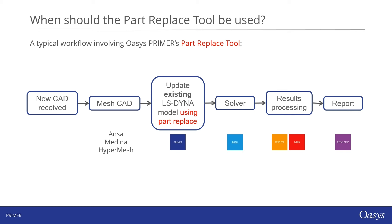Let's look at what a typical workflow might look like involving the tool. Starting from the left, we may have received new CAD for a part that already exists in our LS-Dyna model. Having assessed the CAD, we may decide to remesh the entire part in another piece of software such as Ansa, Medina or HyperMesh and export it in keyword format. We'd then read this keyword file and our existing LS-Dyna model into Primer, where the part replace tool would be used to update our model. Having updated and checked the model, the rest of the workflow proceeds as normal.